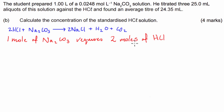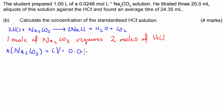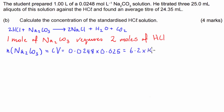From here it's quite logical that we need to figure out how many moles of Na2CO3 we have — that's the next logical step. The number of moles of Na2CO3 is equal to the concentration times the volume. The concentration is 0.0248 times the volume, which is 25 ml, so 0.025. That equals 6.2 times 10 to the negative 4 moles.